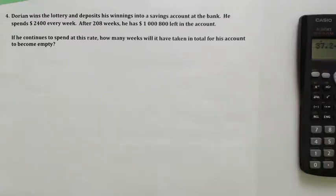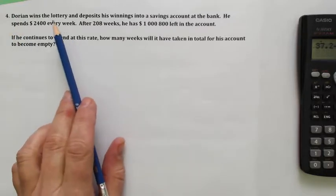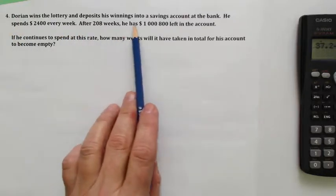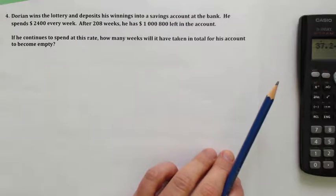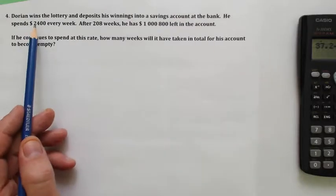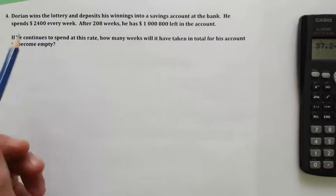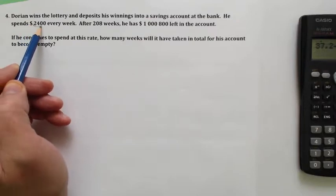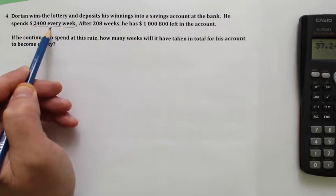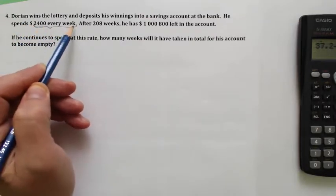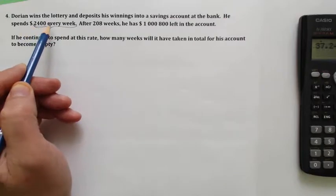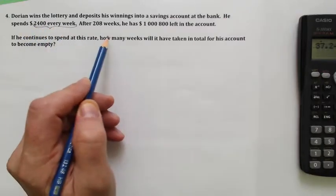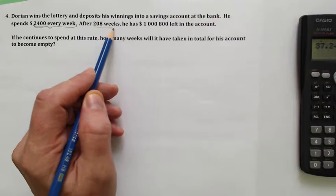Hey guys, this is X and Y intercepts, last one, number four. Dorian wins the lottery and deposits his winnings into a savings account at the bank. He spends $2,400 every week—that's a little indication there about how his bank account is going to change. It's going to change by $2,400 every week. After 208 weeks, he's got $1,000,800 left in the account.